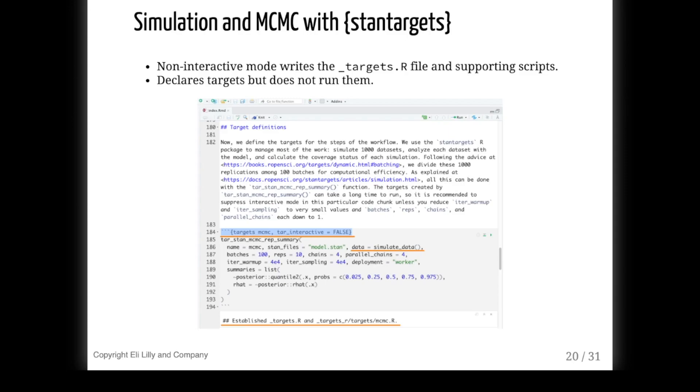But non-interactive mode, which runs when you knit the entire document, is the opposite. Non-interactive mode does not actually execute the code in the chunk. Instead, it saves that code to a script file to define part of the pipeline. That goes for functions like in the previous slide, as well as targets and target factories like the one you see here. The idea is to incrementally define a pipeline now using target markdown code chunks one after another, and then do a serious run of the pipeline outside target markdown later on.